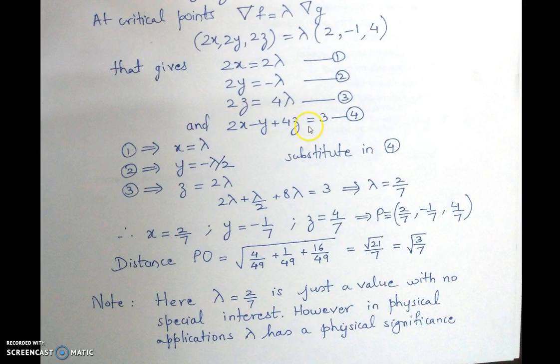So the 4th equation comes as the constraint condition, and that is the 4th equation. Now using these 4 equations we have to solve for x, y, z and lambda.